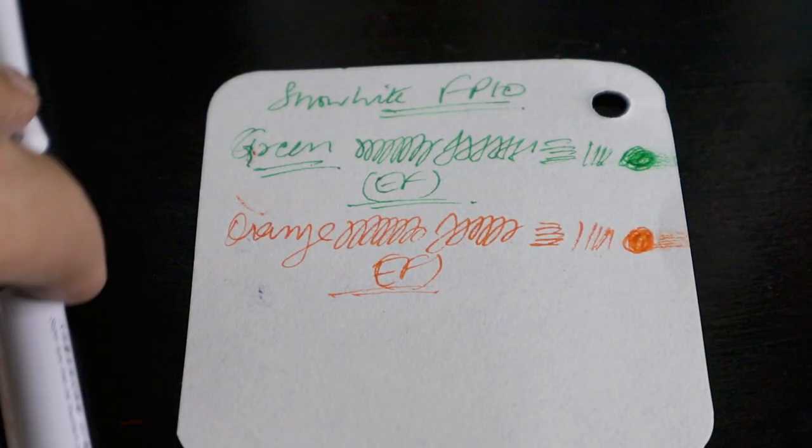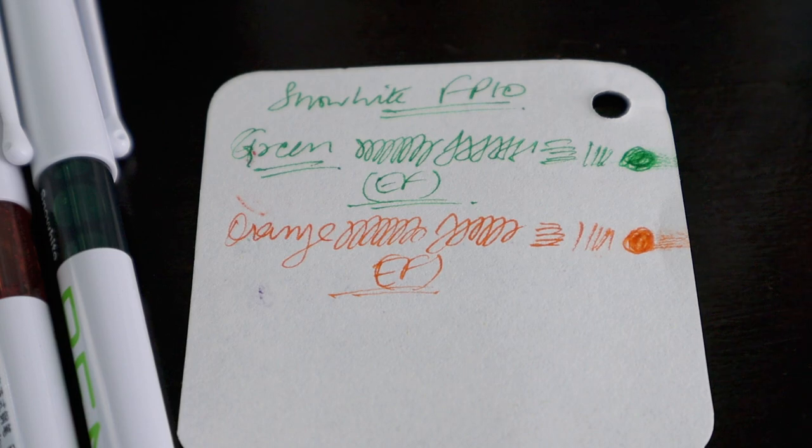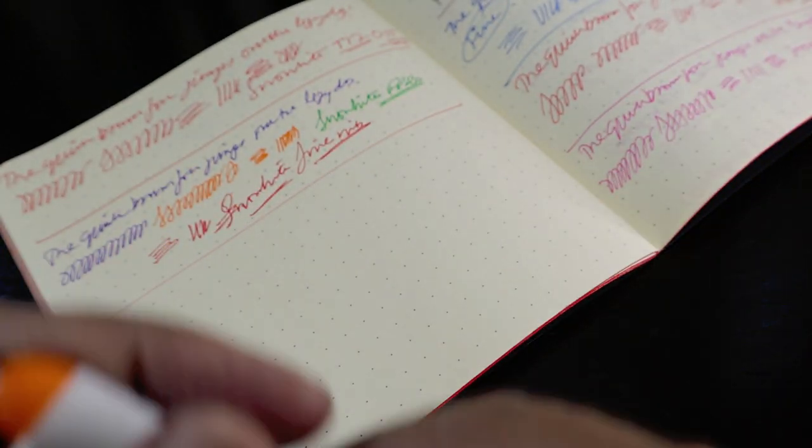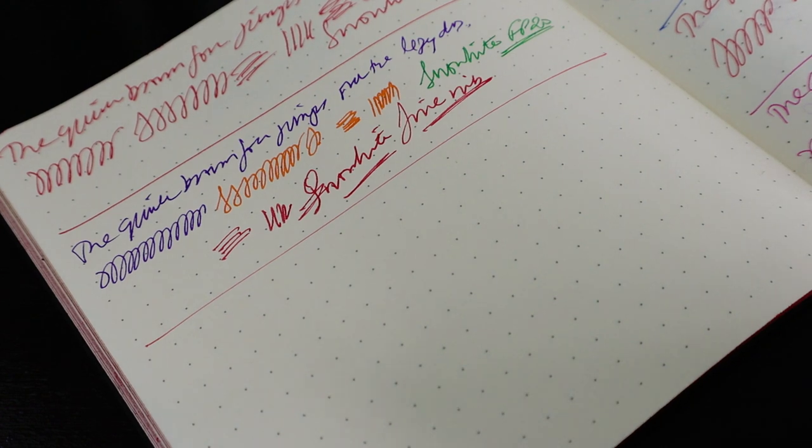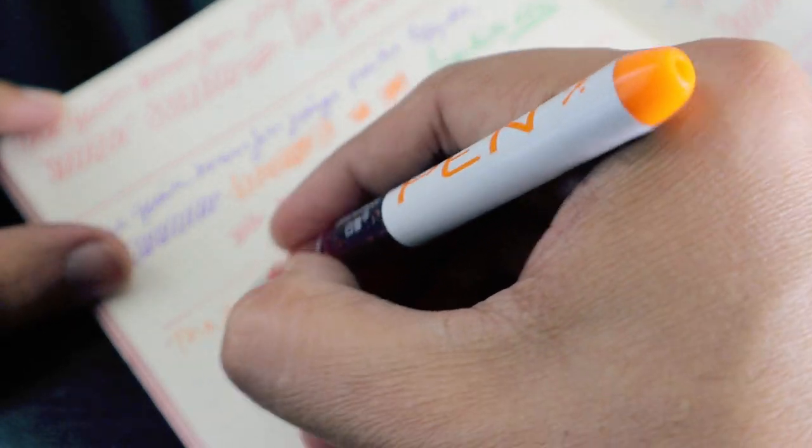So let's bring our writing journal and try to write in the same as well. So this is our writing journal where we are testing all the pens. You must have seen everything is there in this pen. So let's start writing with the orange one.